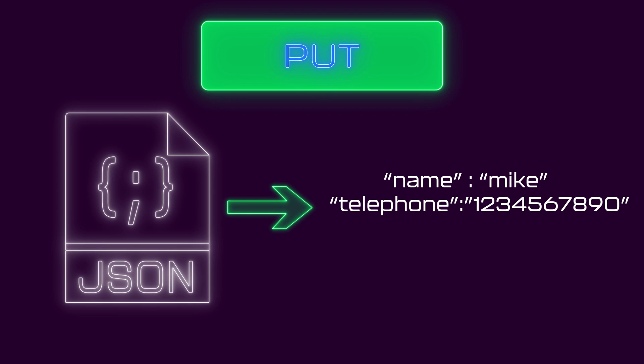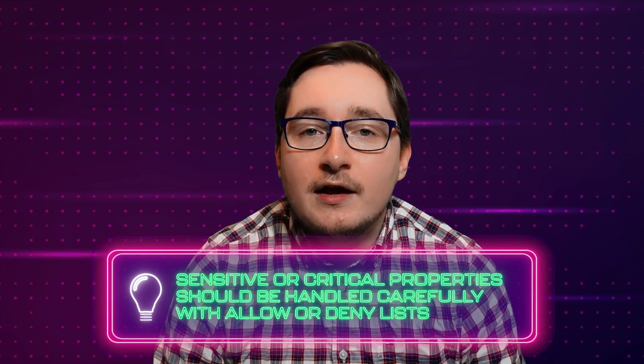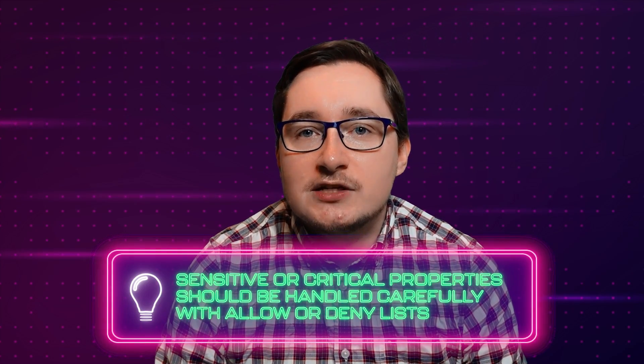However, with mass assignment risks being involved, your API is actually able to update other properties as well. The user could be sending name and telephone, but also set the amount of visits to 25 — increasing their visit counter and earning themselves a free Boba. It is important to think about the way your properties get updated across your API endpoints. Sensitive or critical properties should be handled carefully with allow or deny lists from being accessed by specific API endpoints. The combination of different API exploits — having the ability to gain access to specific functions through broken function level authorization and then using mass assignment to update properties — is a major risk to your API.